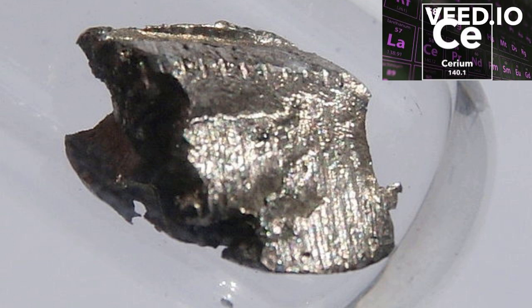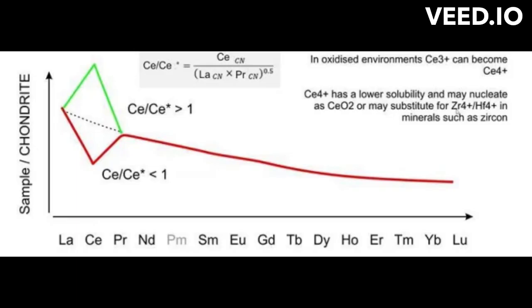The cerium anomaly in geochemistry is the phenomenon where cerium concentration is either depleted or enriched in a rock relative to the rare earth elements. A cerium anomaly is said to be negative if cerium is depleted relative to the other rare earth elements when the cerium concentration ratio is less than 1, and is said to be positive if cerium is enriched relative to the other rare earth elements when cerium concentration is greater than 1.